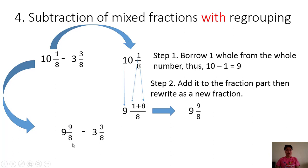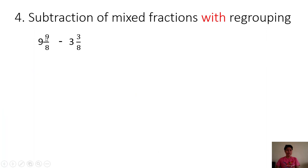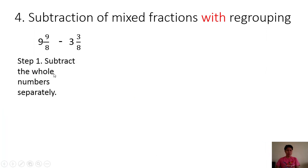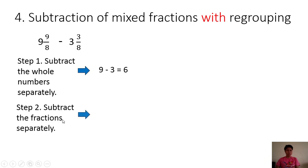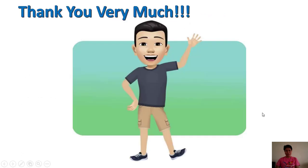We have 9 and 9/8 minus 3 and 3/8. Subtract the whole numbers separately: 9 minus 3 is equal to 6. Subtract the fractions separately: 9 minus 3 is equal to 6, copy the common denominator 8, giving 6/8. Since 6/8 is not in simplest form, we reduce it to 3/4. Therefore, the answer is 6 and 3/4.